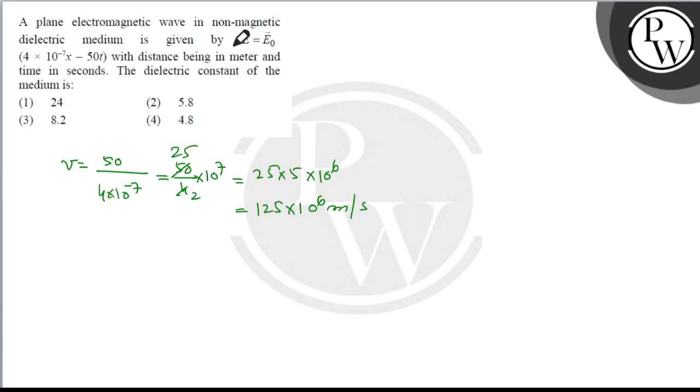The question states it's a non-magnetic medium, so the value of mu naught remains the same, only epsilon will change. We know that c equals one upon root mu naught epsilon not, and speed in this medium is one upon root mu naught epsilon.